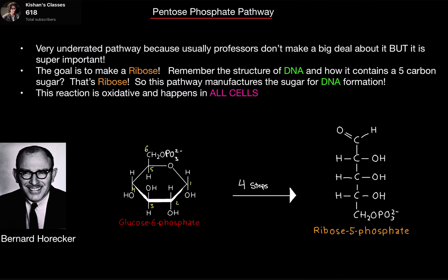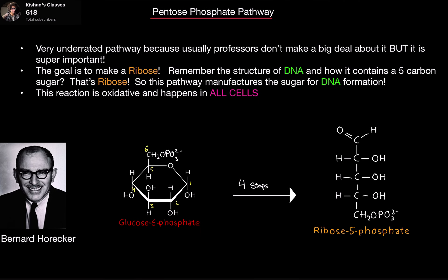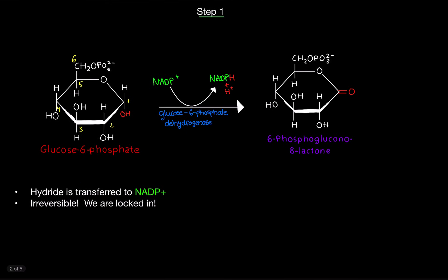You probably learned in molecular biology that DNA consists of a phosphate group, a five-carbon sugar, and a nitrogenous base. So this pathway is making a five-carbon sugar. We're taking glucose-6-phosphate and turning it into ribose-5-phosphate using four steps. Bernard Horrecker came up with it. Let's get started.